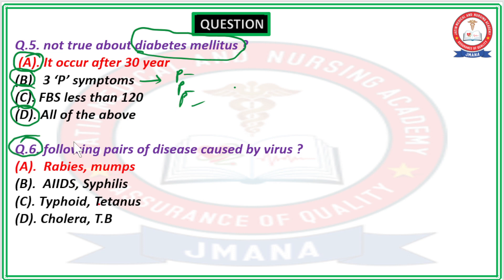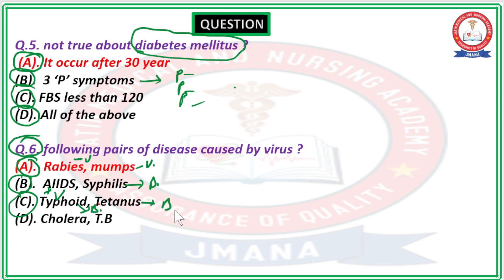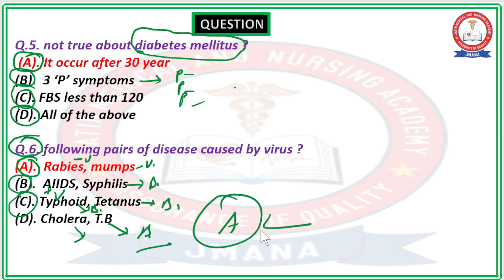Question number 6: Which pair of diseases is caused by a virus? Option A — rabies and mumps: both are viral diseases. Option B — AIDS and syphilis: AIDS is viral, but syphilis is bacterial. Option C — typhoid and tetanus: both are bacterial. Cholera and TB are also bacterial diseases. Therefore the correct answer is Option A — rabies and mumps.